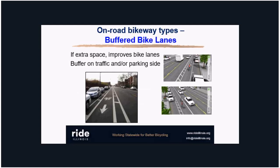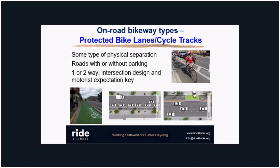If you have extra pavement room, you can add buffers to your bike lane — either on the parking side or on the travel lane side, and there are reasons for choosing one over the other. If you only have room for one buffer, that's still a significant improvement over a standard bike lane.